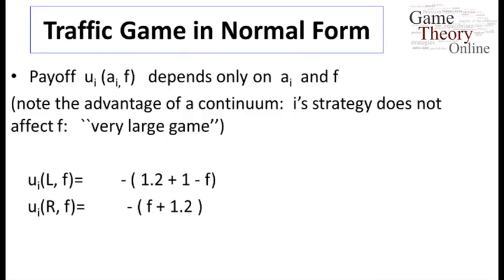The delay U_i of the players will be a function of the action A_i chose by the player, left or right, and that fraction of players who decided to go right. Notice that we're making an assumption here of there being many, many players. Since there are infinitely many players, the action of the one player won't impact that fraction that chose left or right. The payoff is simply minus the sum of the delays. In the case of going left, it is a fixed delay of 1.2 and then a variable delay 1 minus f. And similarly for the act of going right.